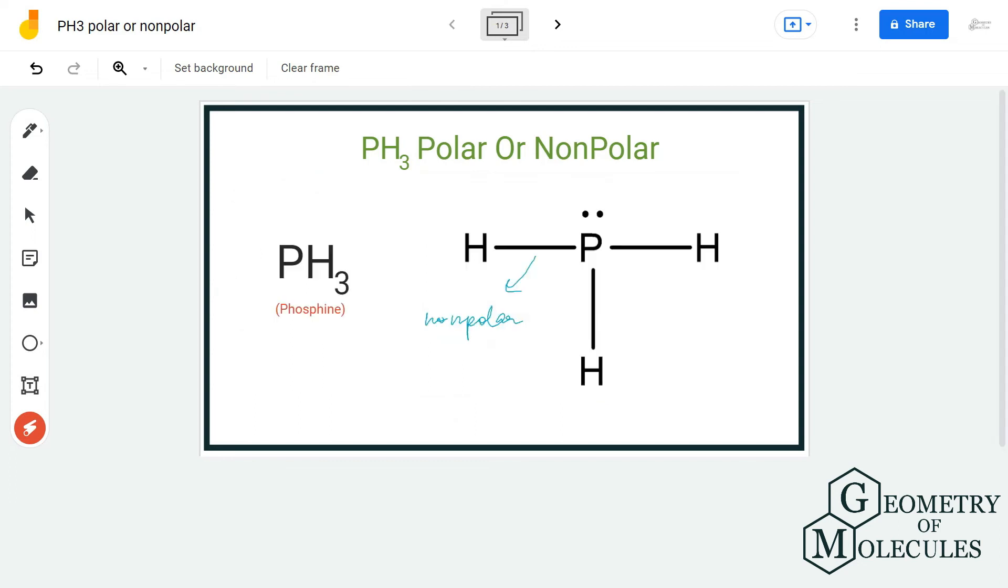It creates partial distribution of charges. It will not have polarity like ammonia molecule or other molecules that are quite polar, but there is polarity because of this lone pair. Although these bonds are non-polar, PH3 molecule is a polar molecule.